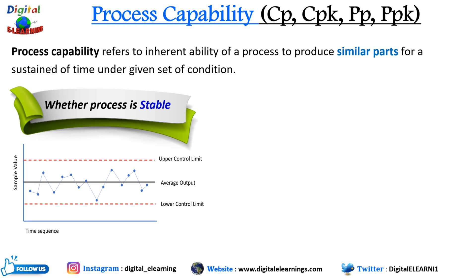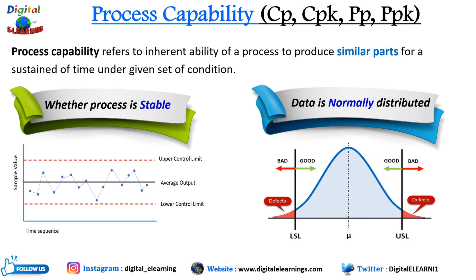Trends or cycles make it difficult to assess process capability. The second requirement is that the data is normally distributed — that is, the process follows a normal distribution, also known as the bell curve. If the data collected from the process doesn't fit a normal distribution, it may indicate the process is not predictable or consistent, making it difficult to assess its capability accurately.